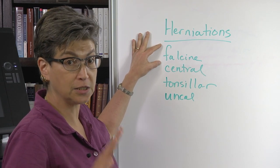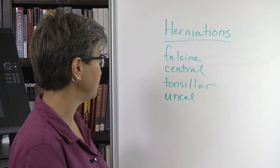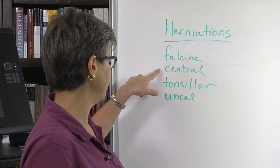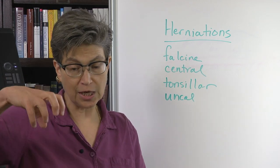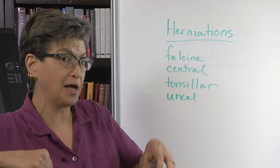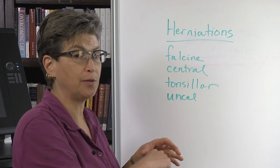Another type of herniation is where the central part of the forebrain—basically the hypothalamus—slips back toward pressing on the brainstem down the center of the brain.